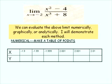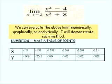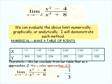For the numerical approach, let's make a table of points. Here we are choosing x values which are approaching negative 2 on both sides. When we replace x with those values, we find that the y values that result are included in the table. These values seem to be approaching negative one-third as x gets closer to negative 2. Therefore, we can conclude from our table that as x approaches negative 2, the y value approaches negative one-third.